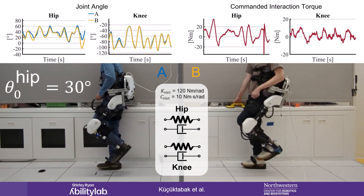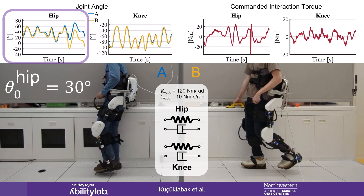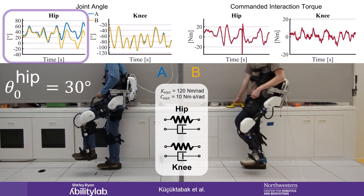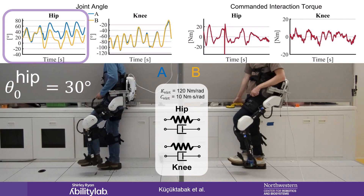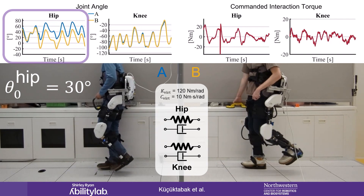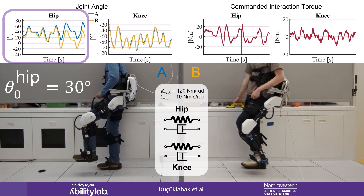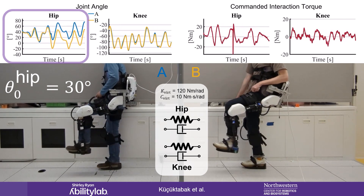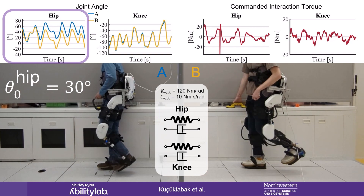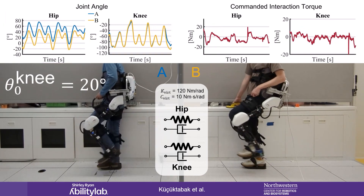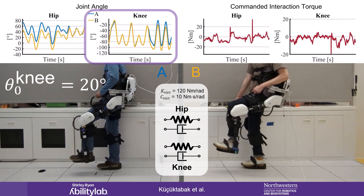We can also adjust the neutral angle of the spring between the users. Here, the neutral angle for the hip is 30 degrees, meaning that the hip angle of user A must be 30 degrees greater than user B for zero virtual spring torque at the user's hips. This paradigm can be useful for challenge-based rehabilitation methods, such as haptic error augmentation. Similarly, this offset feature can be implemented on different joints or multiple joints at the same time.